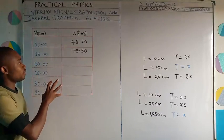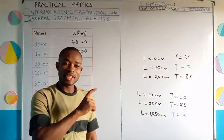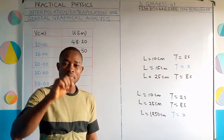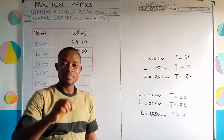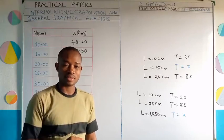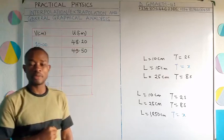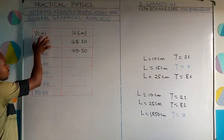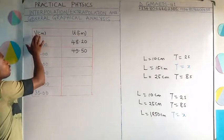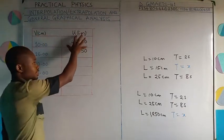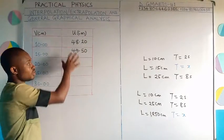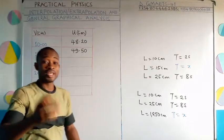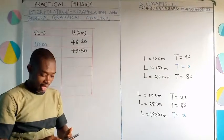I have this table of values, actually obtained from running an experiment to determine the mass of a meter rule using known masses. For these positions, which we call v, the values of u — the balance points — were recorded. I only showed you two values here, but actually I got all the values.